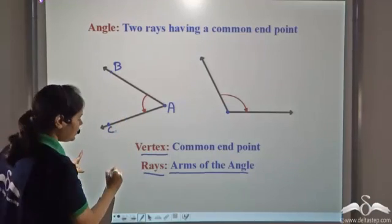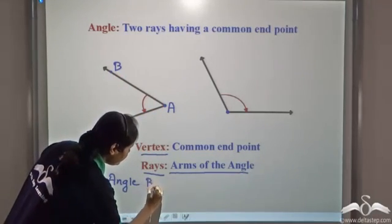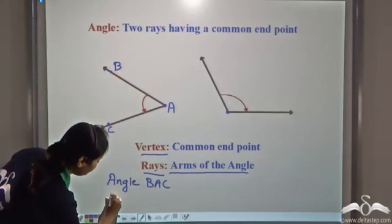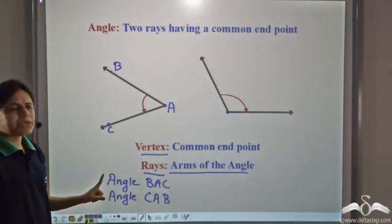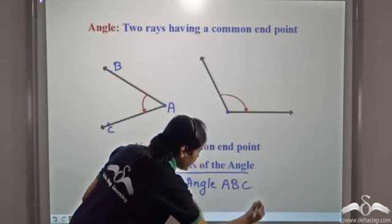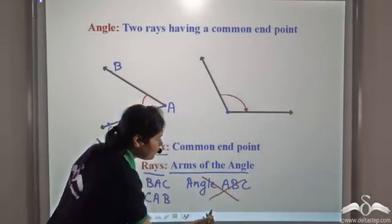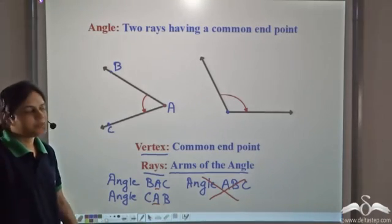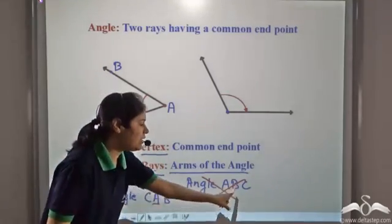So I can call this angle BAC, or I can also write it as angle CAB. But can we write it as angle ABC? No. We can never write it as angle ABC because the point which is at the vertex has to be written in the centre. So the point at the centre represents the vertex.